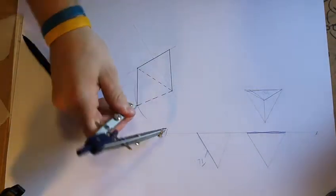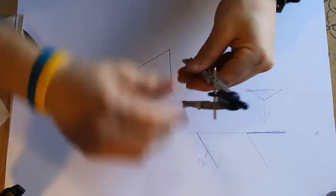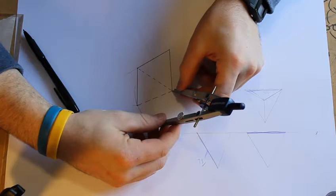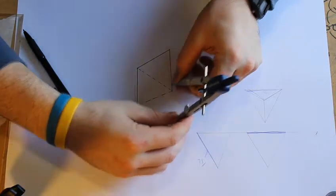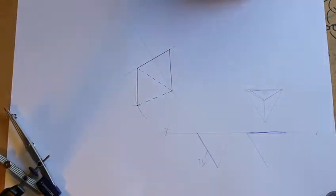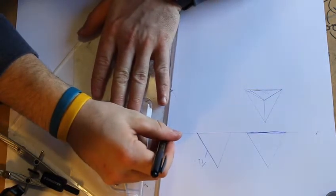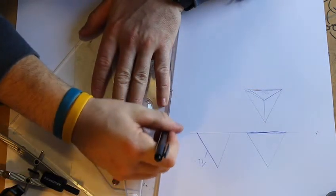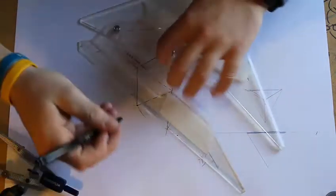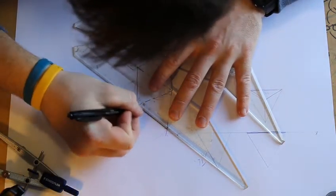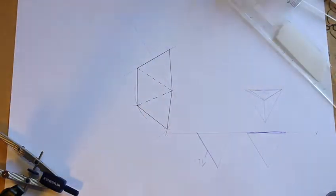We can do the same again to find the final part of our developed tetrahedron excluding base. Here we can use a solid line, and that is how we can use triangulation to find true shapes.